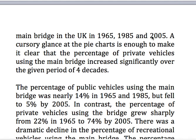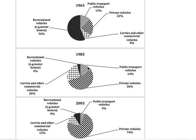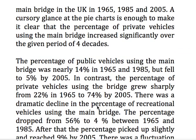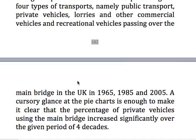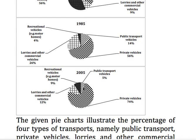This is four decades, 40 years, and the percentage of private vehicles using the main bridge increased significantly. The percentage of public transport vehicles using the main bridge was nearly 14% in 1965 and 1985, but fell to 5% by 2005. As you can see, the percentage is 13 and 14 — nearly 14% — in those two years, but it fell to 5% by 2005.